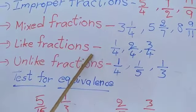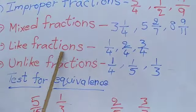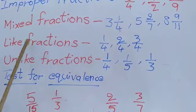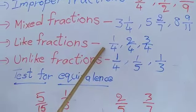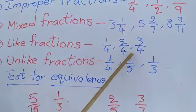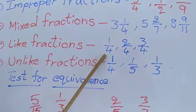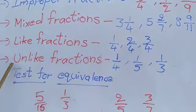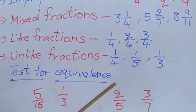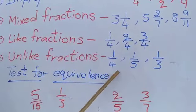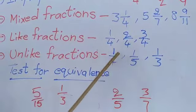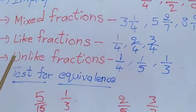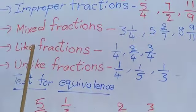Like fractions: the fractions which have the same denominator are called like fractions. Unlike fractions means different denominators — fractions which have different denominators but numerators are same are called unlike fractions.